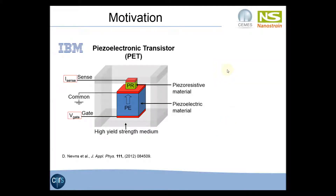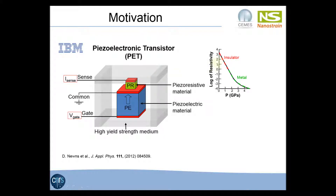The main motivation for this project is a new type of transistor currently developed by IBM, called a piezoelectric transistor. In this device, there are two main materials — a piezoelectric and a piezoresistive — placed between three electrodes. When a voltage is applied to the gate at the bottom, the piezoelectric material expands, applying pressure to the piezoresistive. Due to the pressure, the piezoresistive undergoes a transition from an insulator to a metallic state, creating a conductive path between the sense and the common electrode, turning the device on.